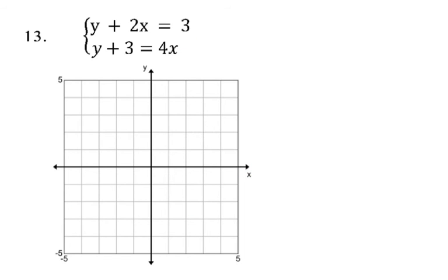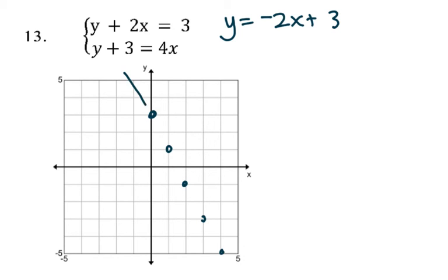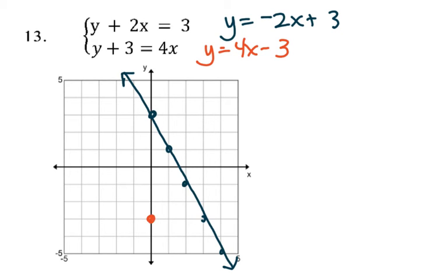Number 13: go ahead and pause the video and try this one yourself. You'll have to put both equations into slope-intercept form and then see if you can find the solution. What you should have done: take the first equation, move the 2x, so y equals negative 2x plus 3. Graph that line — every point is a solution to that equation.